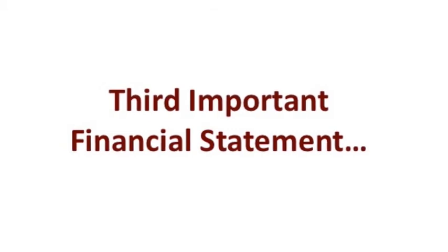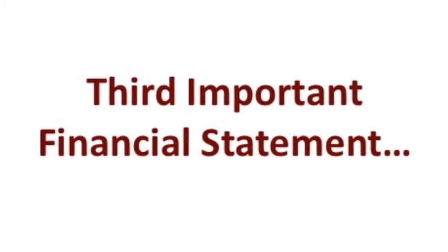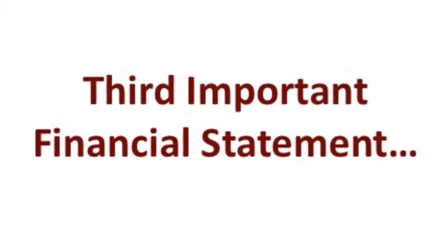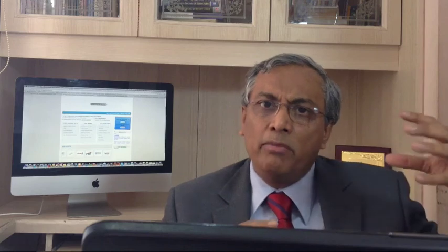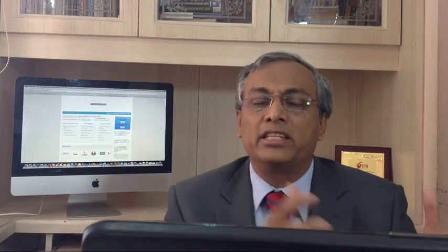We have now understood two financial statements of a company: the balance sheet and the P&L statement. There is also a third important statement known as the cash flow statement, which tells you how money has flowed into and out of the company. These three statements, when studied together, give you a very good understanding of what the company is all about and how it has conducted its business over the years.